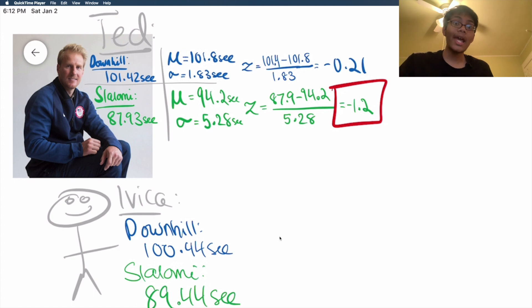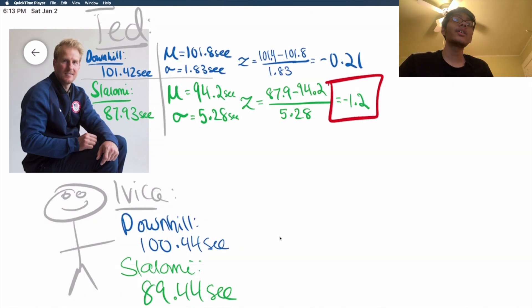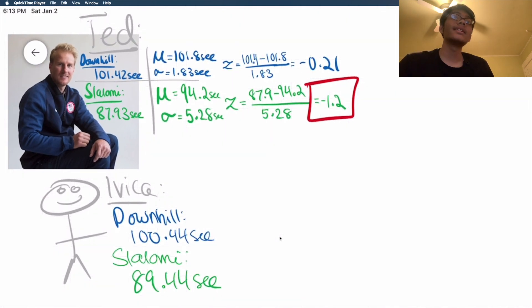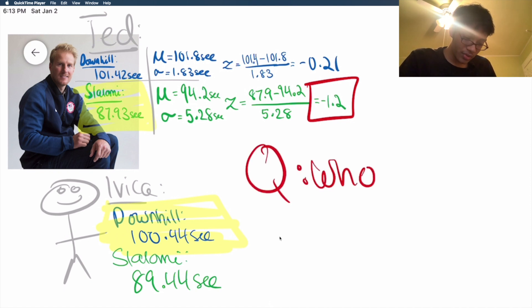The question is, who's better at what sport? Who's better compared to their competitors? I mean, clearly this Ivica guy has got Ted beat in downhill. But Ted's got Ivica beat in Slalomi. But who would win overall? You can see that Ted has less time for Slalomi, but Ivica has less time for the downhill. Well, who's better in their respective category? And who fared better in their worst category? So who would win overall? That's the main question we're asking. Who would you give the gold medal to, Ivica or Ted?